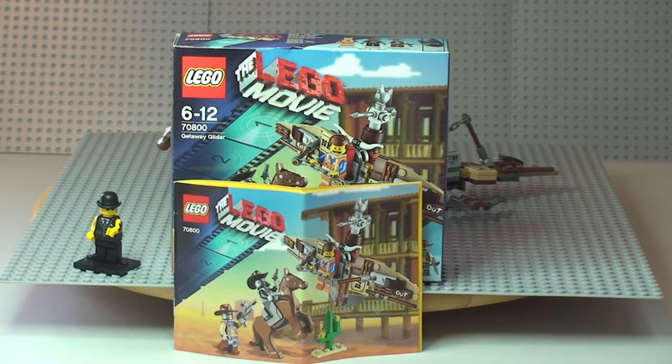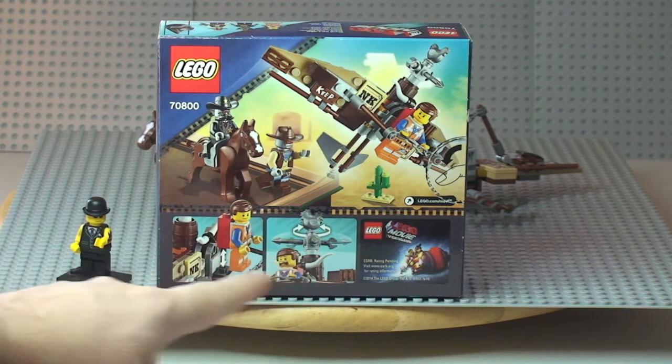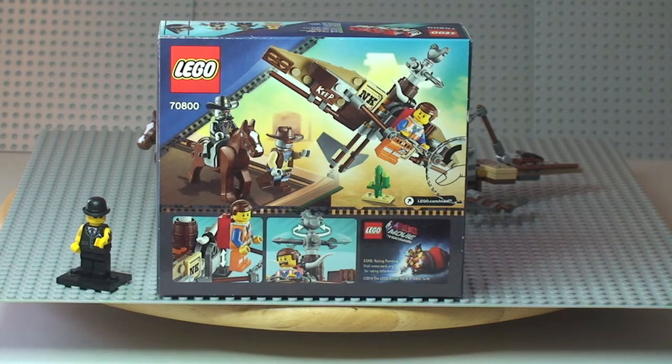There you can see a shot of the instruction manual, small instruction manual, and the front of the box. Let's take a look at the rear of the box. There's the rear shot of the box showing a scene and some of the functions in this particular set.